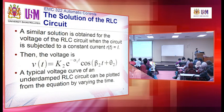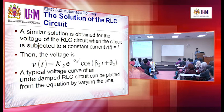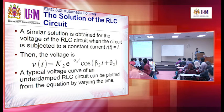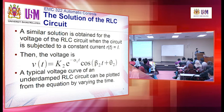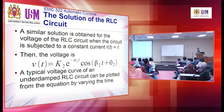For the other example, the RLC circuit, a similar solution is obtained for the voltage when the circuit is subject to a constant current I. The voltage response Vt equals K2 multiplied by an exponential of negative alpha-2 times t, then multiplied by cos(beta-2 × t + theta-2). So we have three terms: the constant K2, the exponential term, and the cosine term.